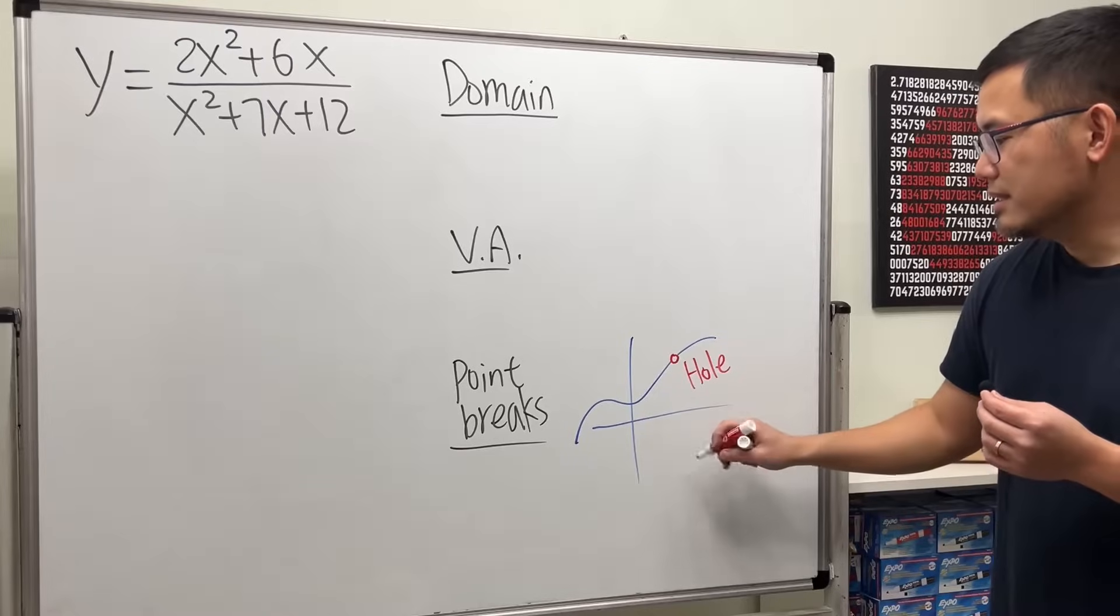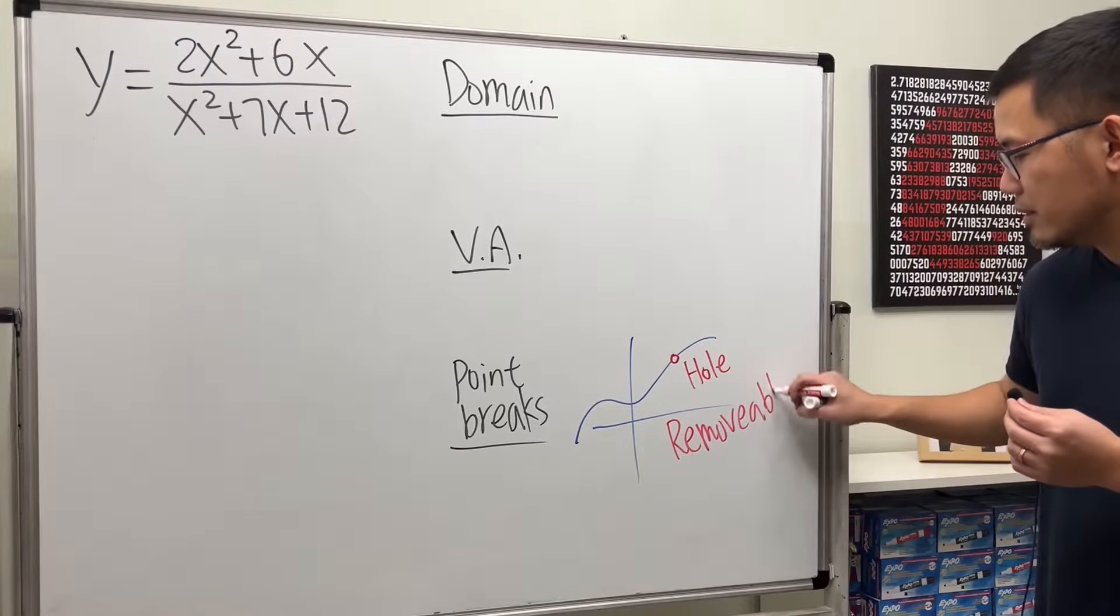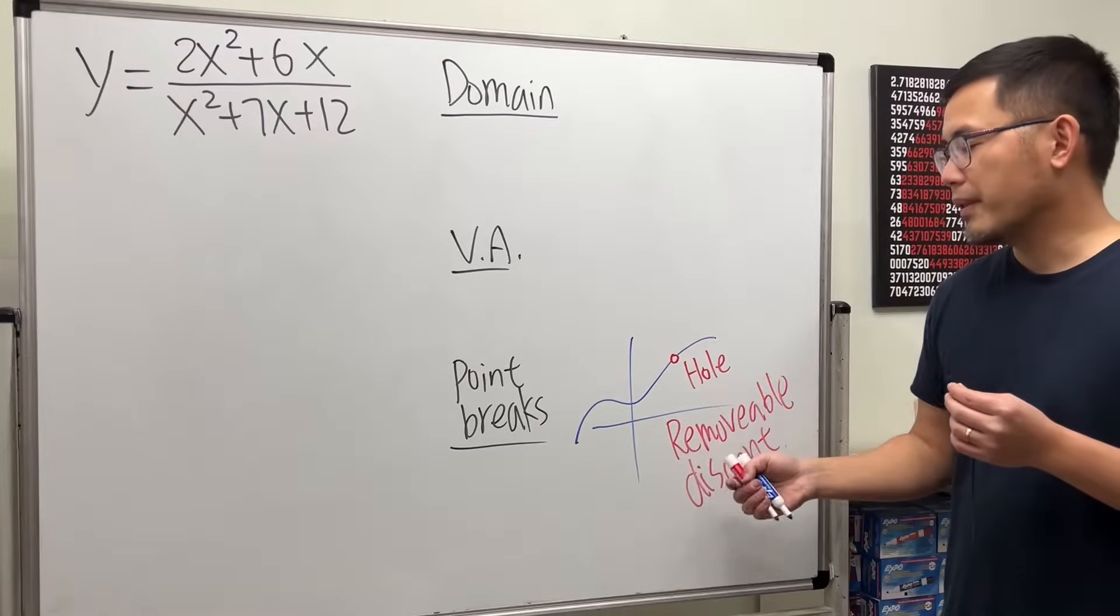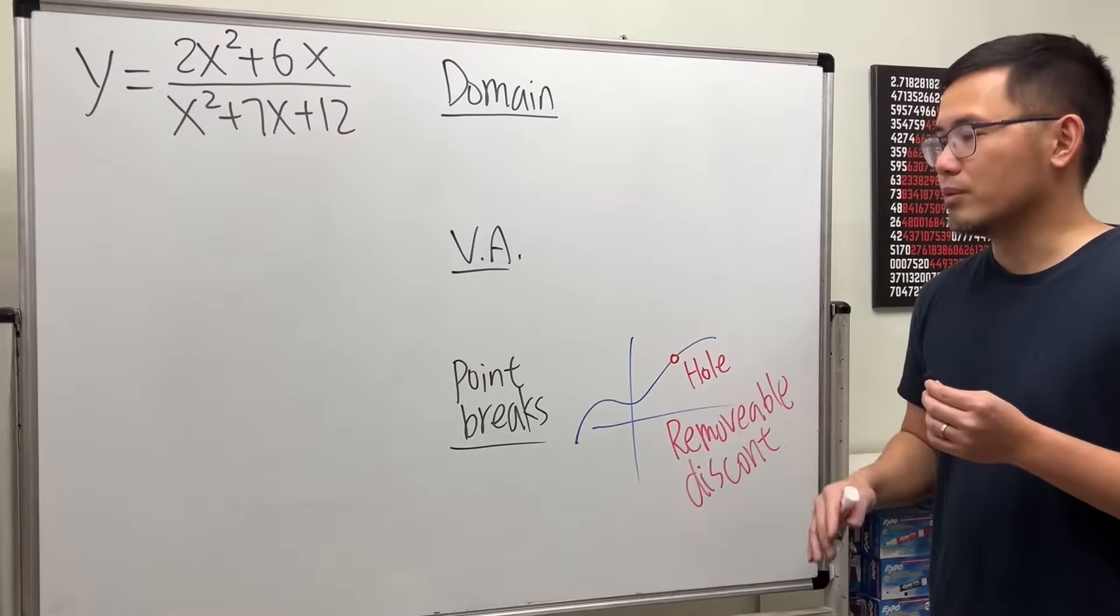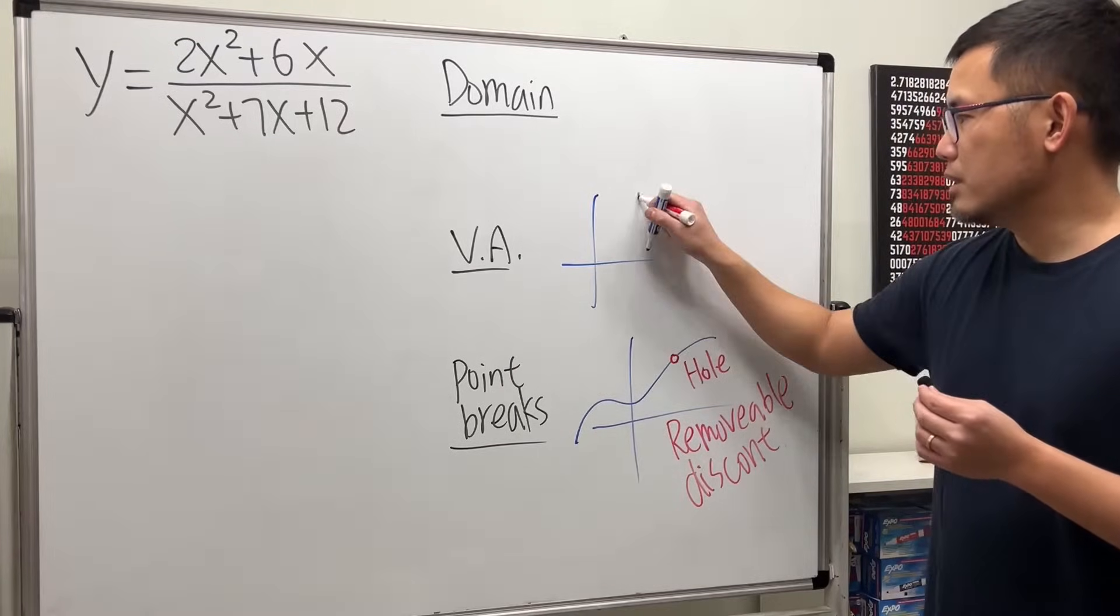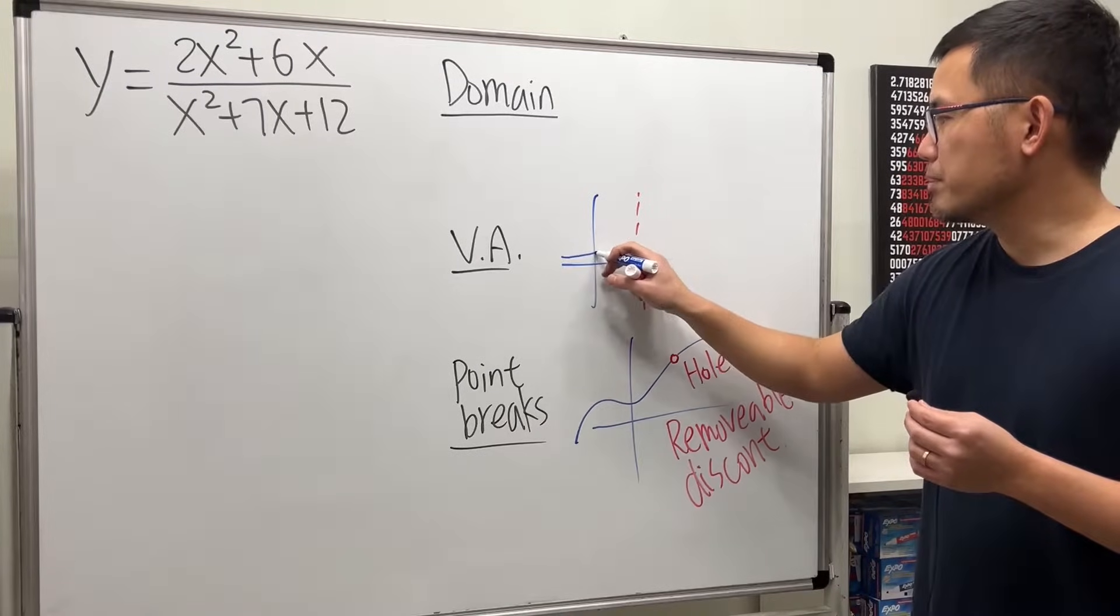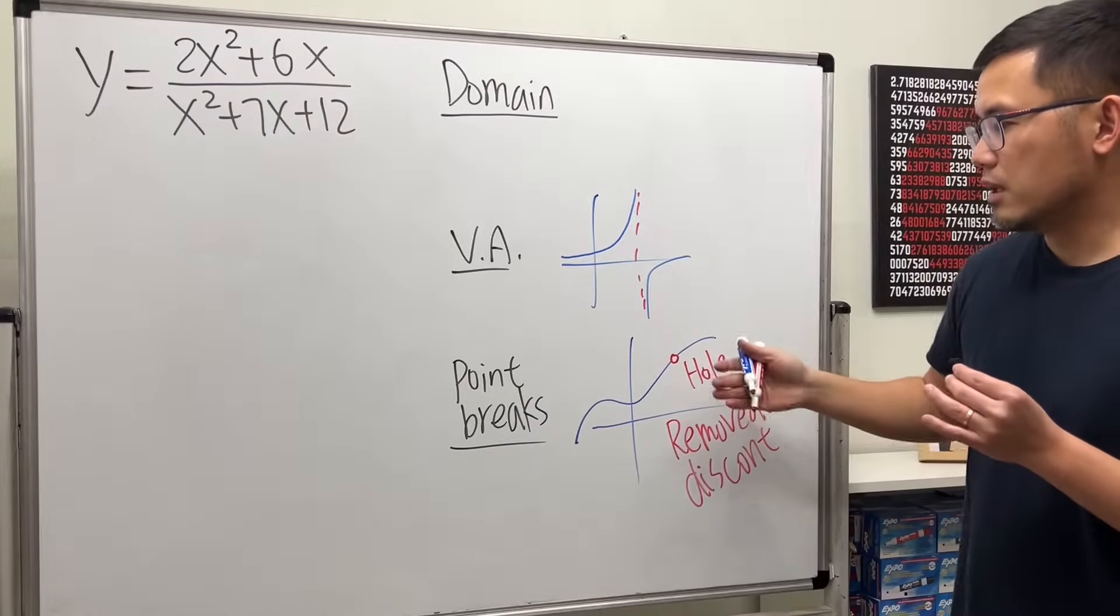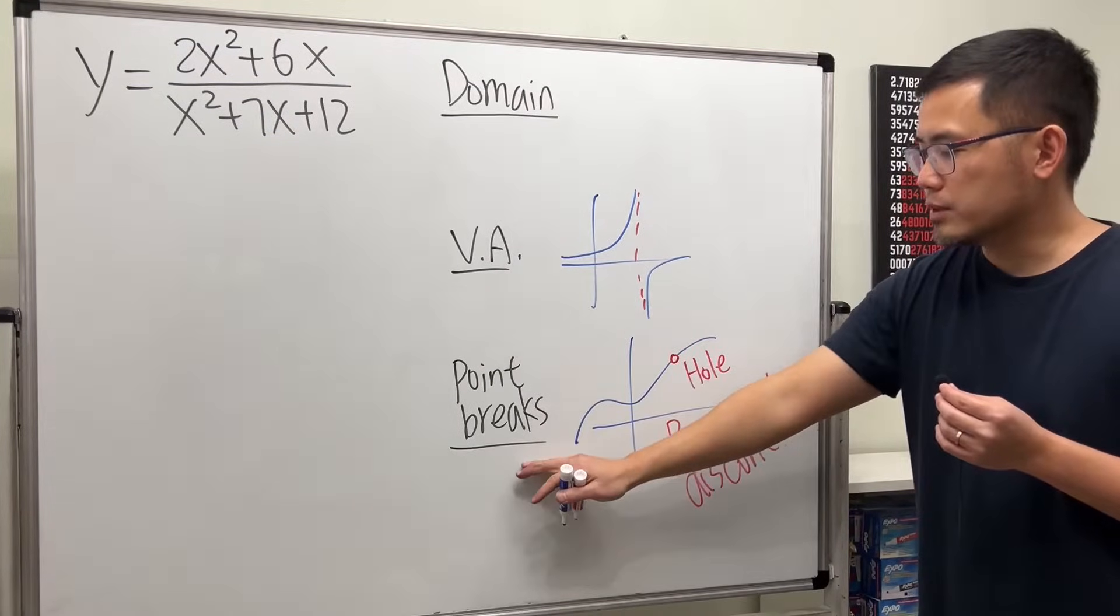And in this situation, this is also called the removable discontinuity, because the function is not continuous right here. And you can remove it by just viewing the open circle filling the hole. And then, of course, the vertical asymptote is the case that you have something like this. And this is the case when the graph becomes vertical when you approach that x-value. So these are just graphical representations of how vertical asymptotes and point breaks look like.